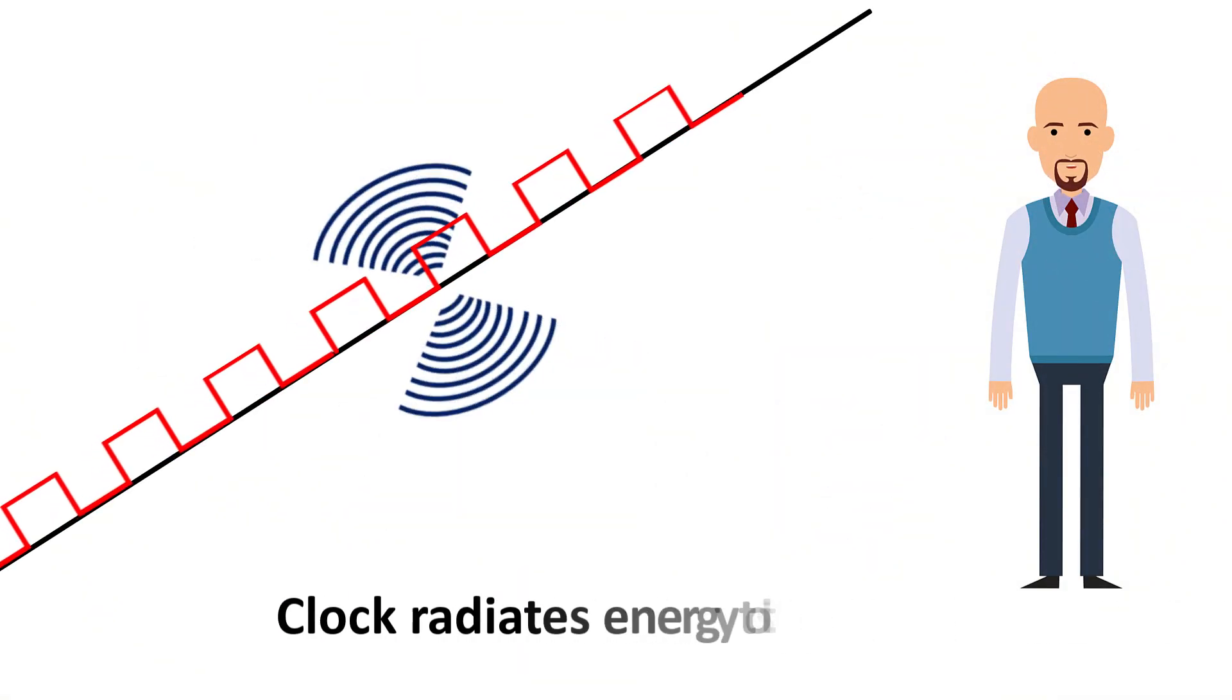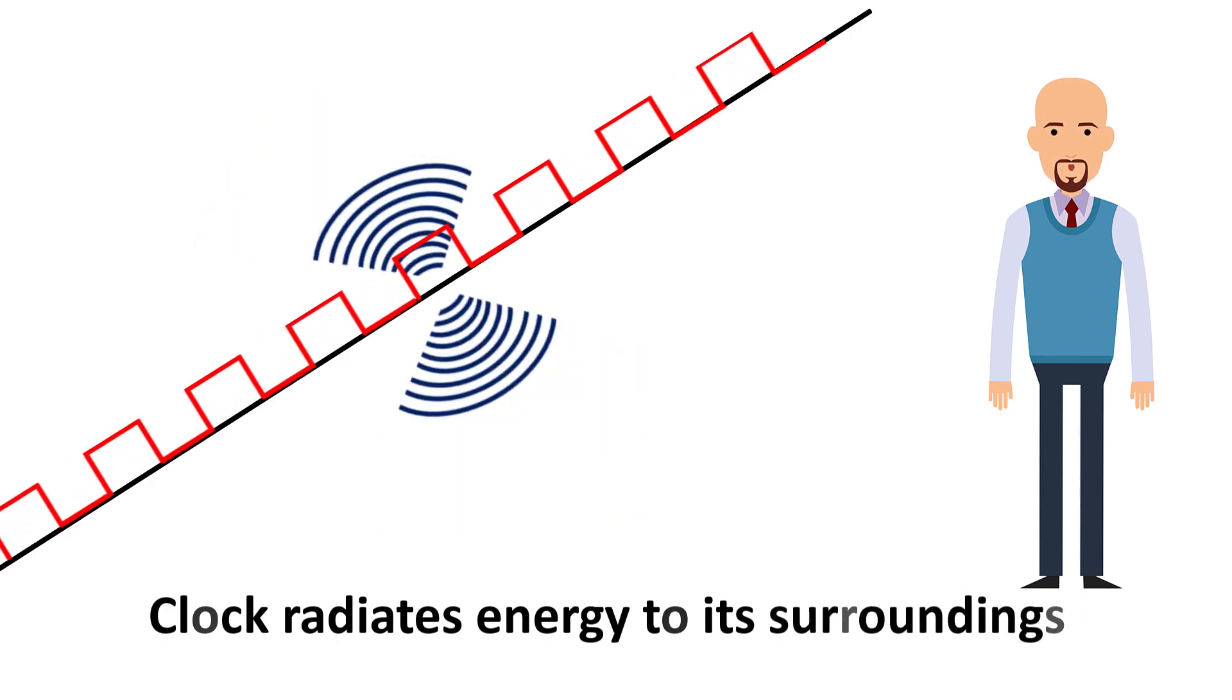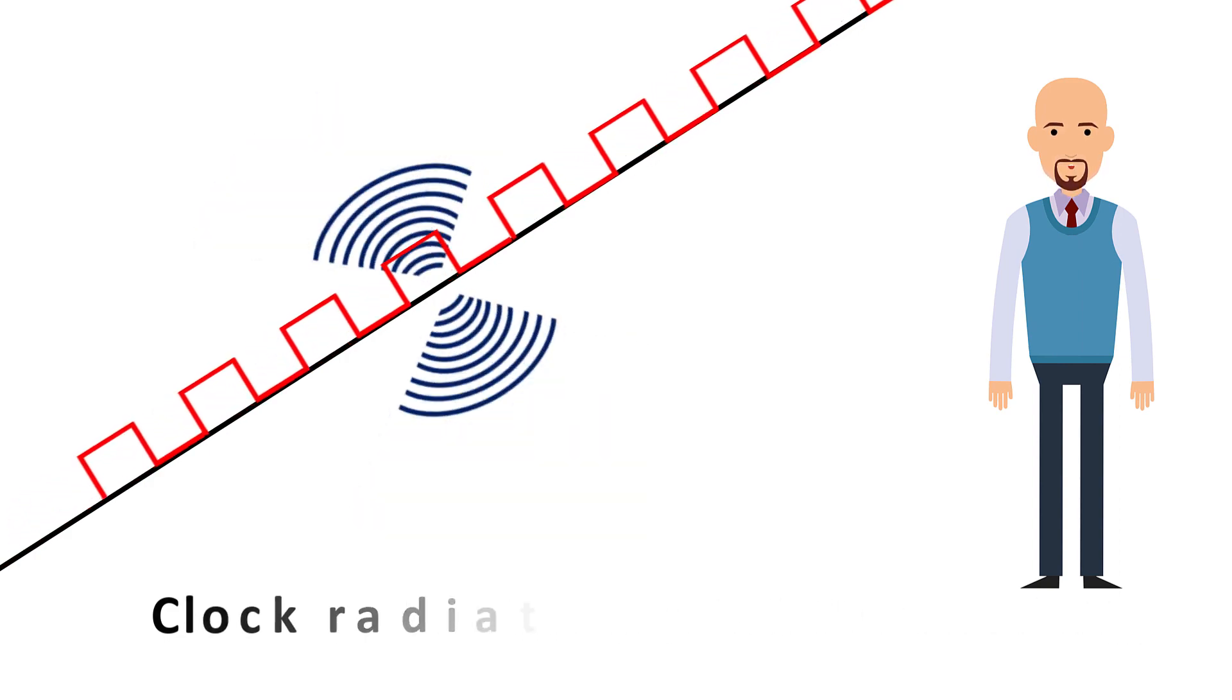When an electrical clock signal is generated in a system, it will radiate a certain amount of its energy into its surroundings.